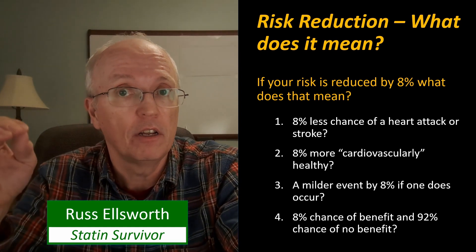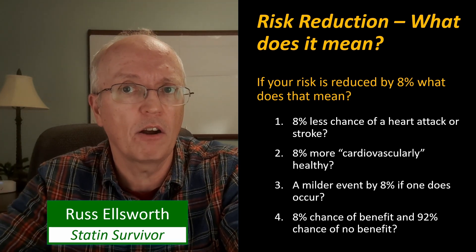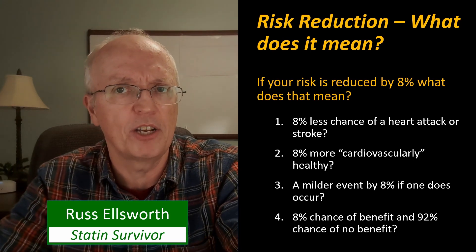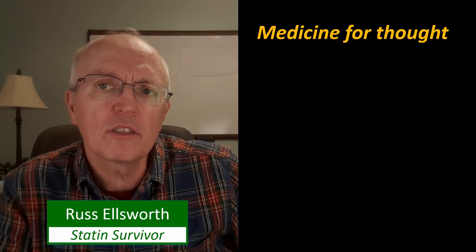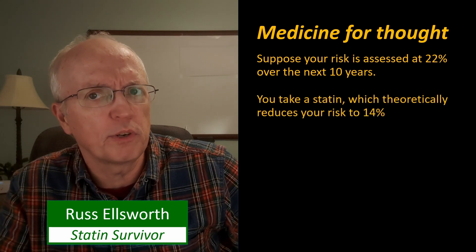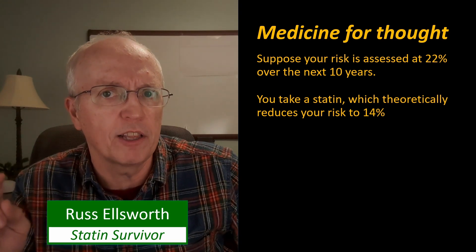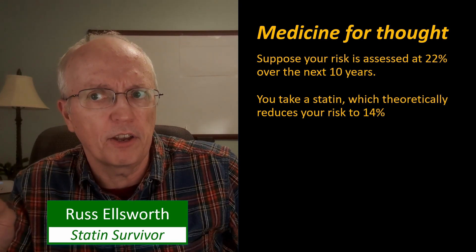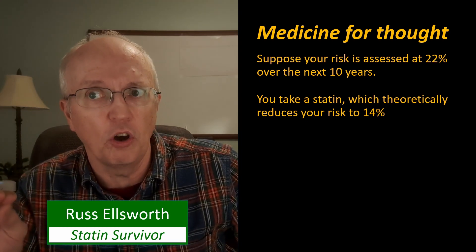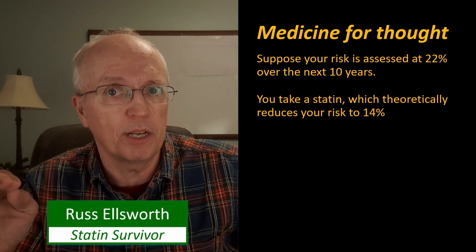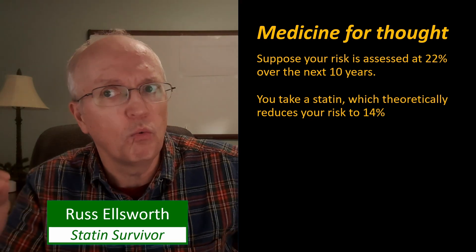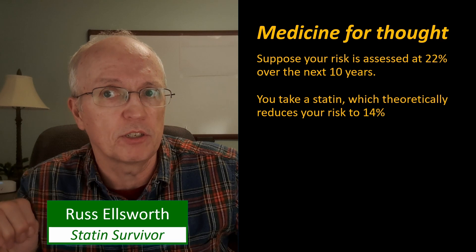Clinical trials are looking for hard results — unambiguous results. Either you had a heart attack or you didn't. Either you died or you didn't. They don't have a way of measuring whether it's milder or you're 8% more healthy. So here's some medicine for thought: suppose your risk is assessed at 22% over the next 10 years, and you take a statin which theoretically reduces your risk to 14%. You've got to watch my previous video about relative risk reduction and absolute risk reduction to understand where that figure came from. Understand that this is an extrapolation — no clinical study has actually shown a drop from a 22% to a 14% risk level.